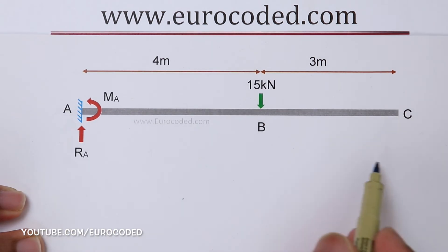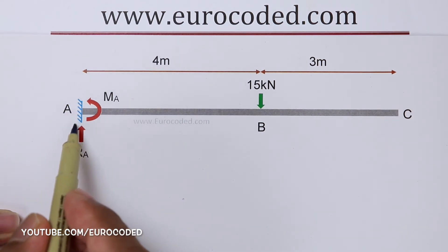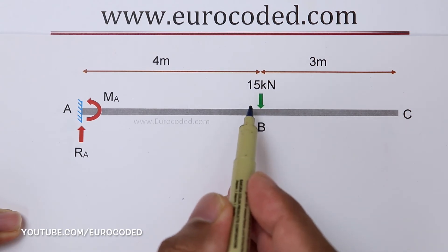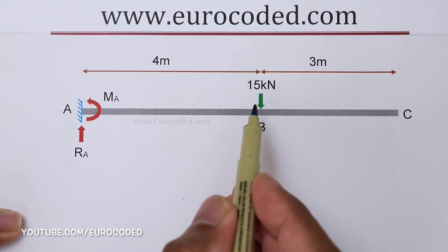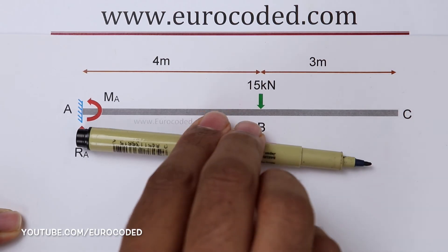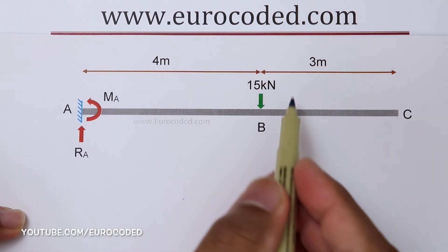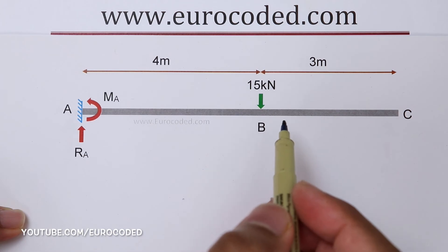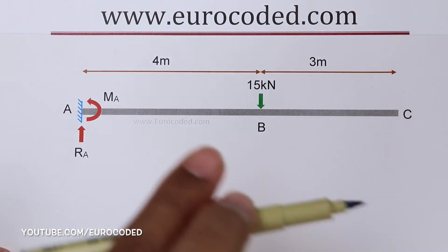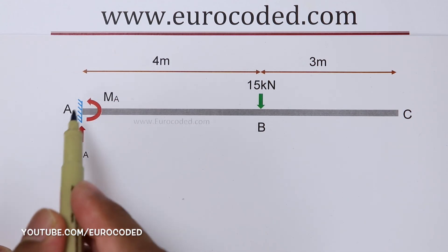Let's look at another example. In this example, if we take moments about point A, then this externally applied force of 15 kN would try to rotate this cantilever beam in a clockwise direction. Therefore, this externally applied force of 15 kN results in a clockwise moment when we take moments about point A.